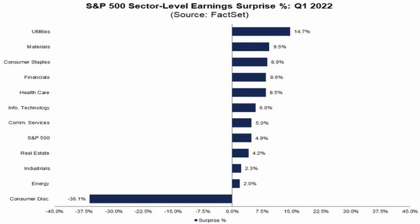All the way to the right, we see consumer discretionary. It makes sense that this industry would have the lowest percentage of firms beating Wall Street estimates. Right now inflation is going crazy, so people still have to pay rent, buy food, medicine, and put gas in their car — those things they can't change. The things they can change are discretionary spending, which would probably be the first things to get cut. So it makes sense that discretionary firms are having lower profit rates.